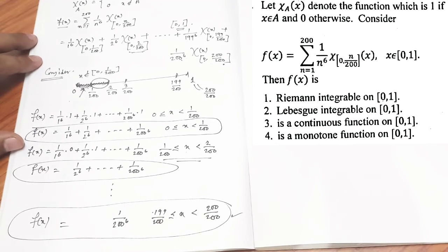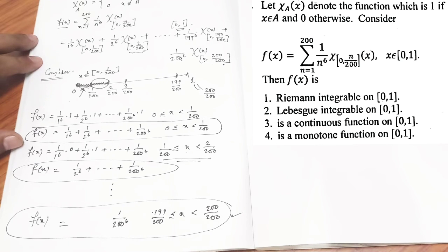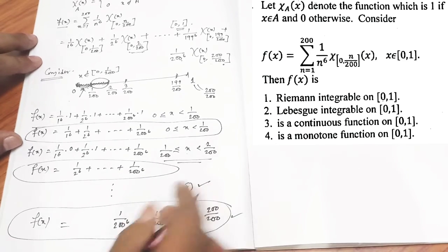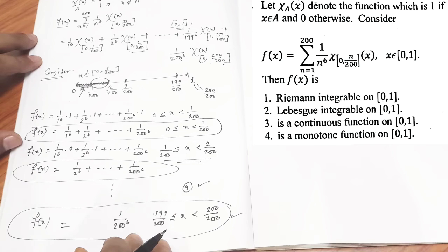So look at the fourth option. In the fourth option they are claiming that your f(x) is a monotonic function on the interval [0,1]. Obviously it is monotonically decreasing function. So our fourth option is correct.